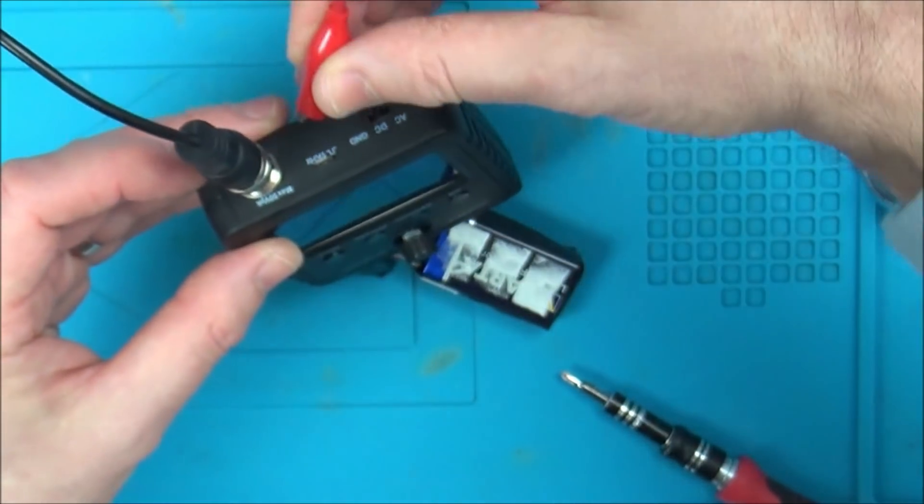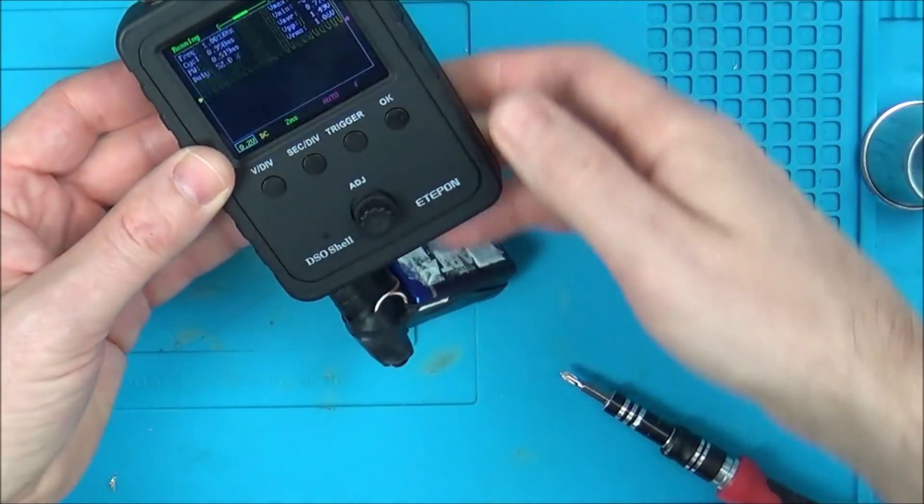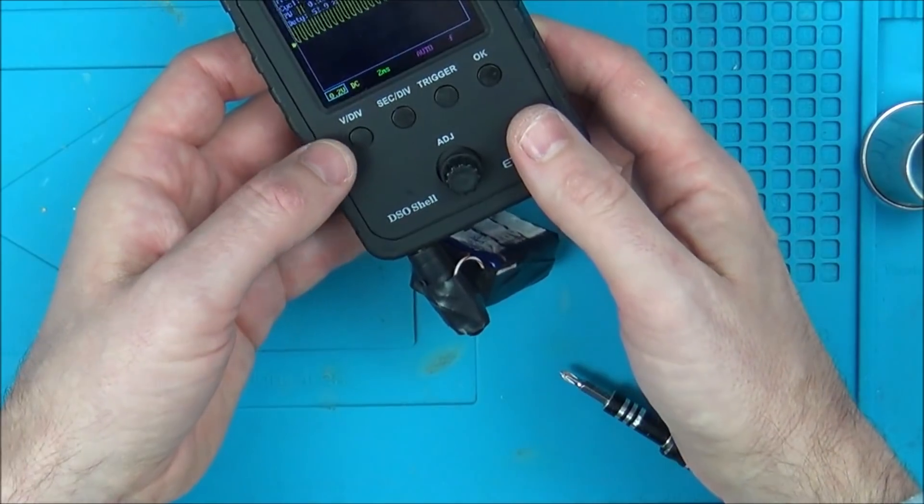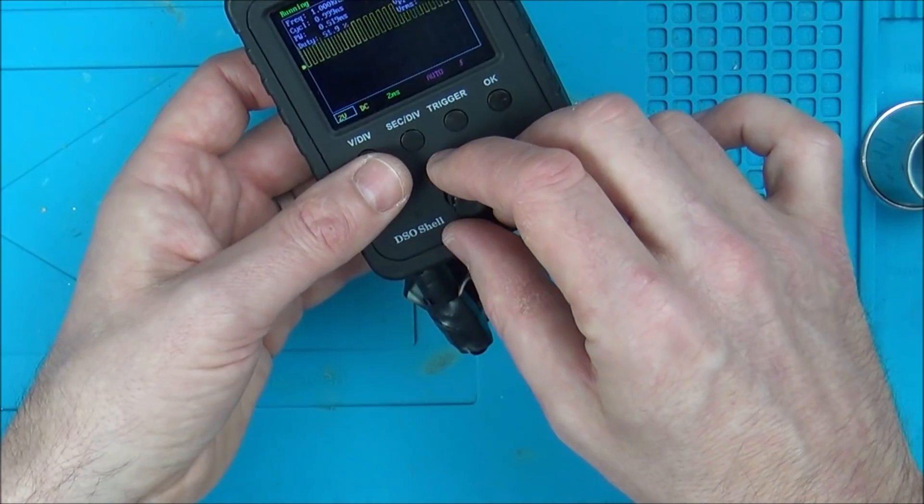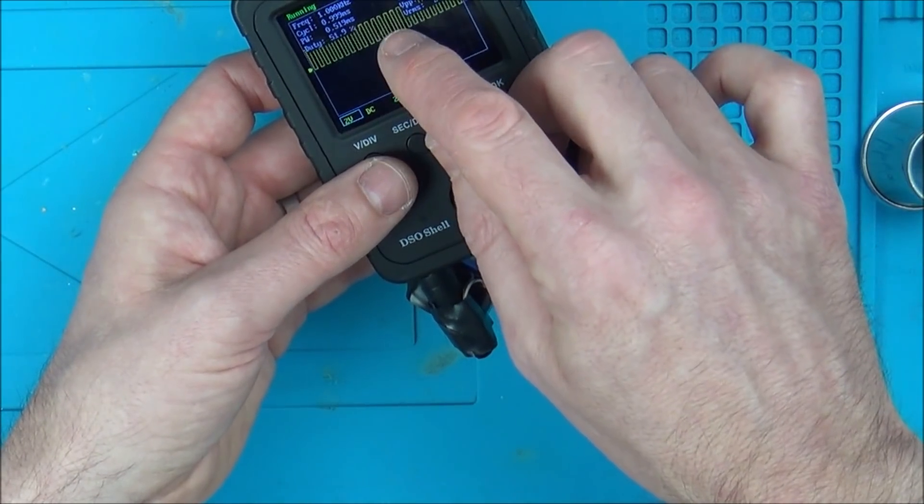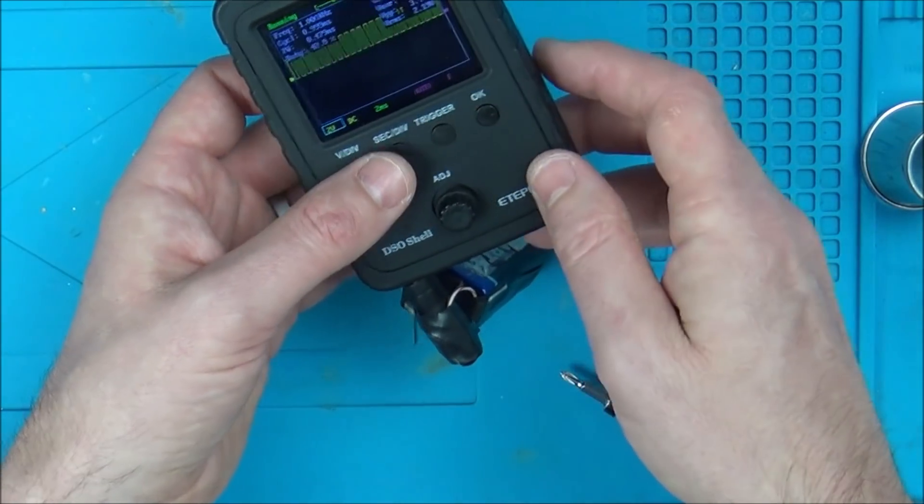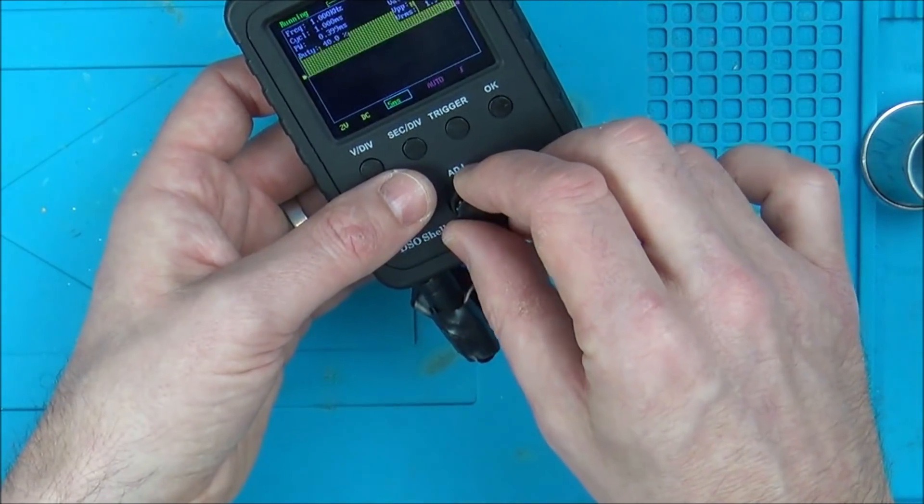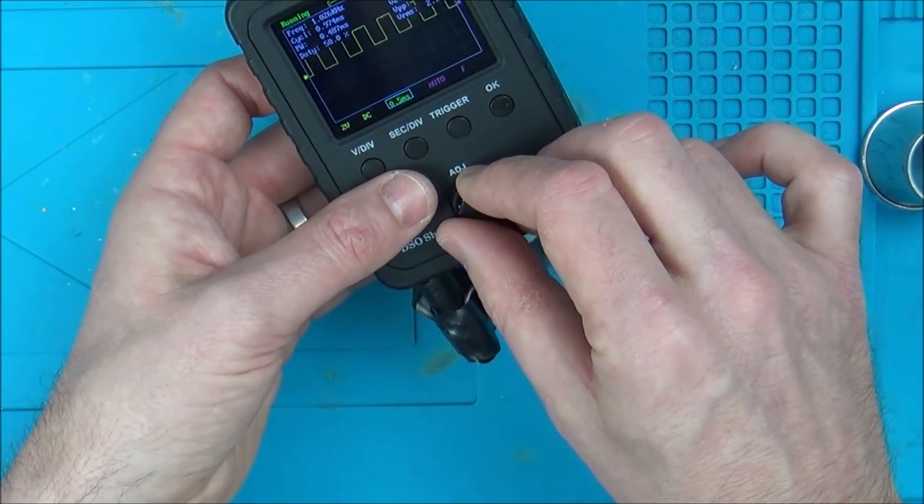And now let's just connect the leads to this top thing here. So this is a 1 kilohertz signal. There we go. So let's change the voltage. Right, so we've got 2 volts there. So each of those is 2 volts, so that looks like it's a 4 volt thing. And let's go to milliseconds and we can change that in there.